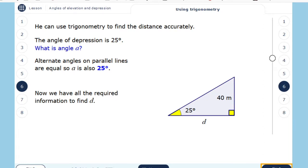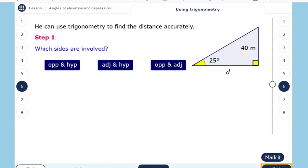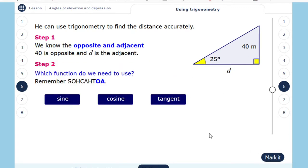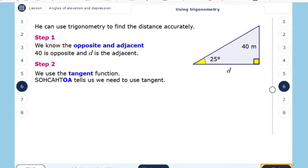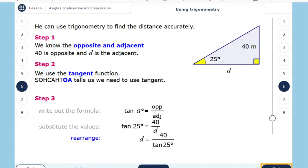Now we have all the required information to find the distance D, which is obviously the opposite side. I know the opposite side and I'm searching for the adjacent. Again I will use tangent. So tangent of 25 is 40 over D. So D is 85.8 meters.